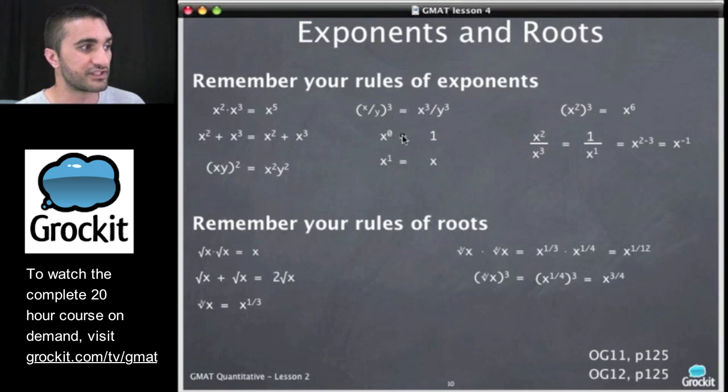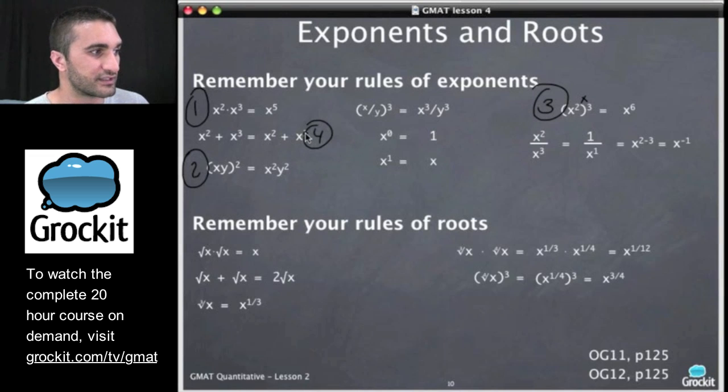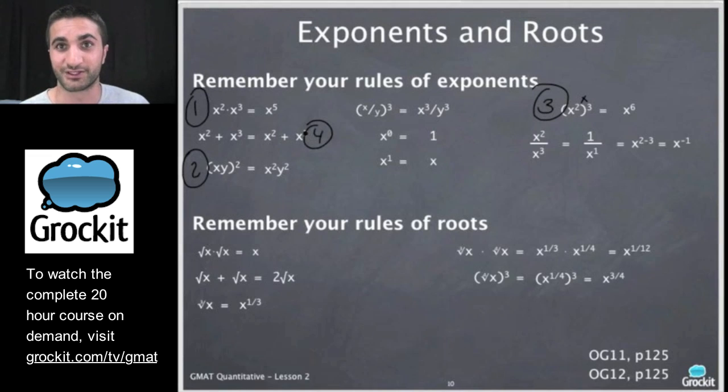Over here, we have a different situation. These are the main exponent rules that they like to play with, where we're raising one exponent and raising it to another. In that case, we multiply them. And they like these because people often confuse one, two, and three with each other, and then if you want to take case four, some people get that confused as well.